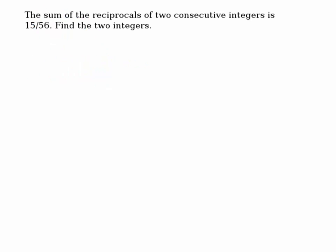It says the sum of the reciprocals of two consecutive integers. So how do you write the reciprocal? What's the reciprocal of x? It's 1 over x. So it would be 1 over x, plus the reciprocal of the next number after that would be what?